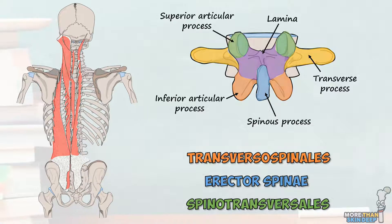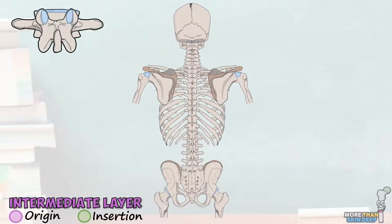The next layer out from the deep back muscles is known as the intermediate muscle layer. This consists of only two muscles and both of their functions are to act on the rib cage to either elevate or depress it. For this reason, this layer is also sometimes known as the respiratory muscle layer.